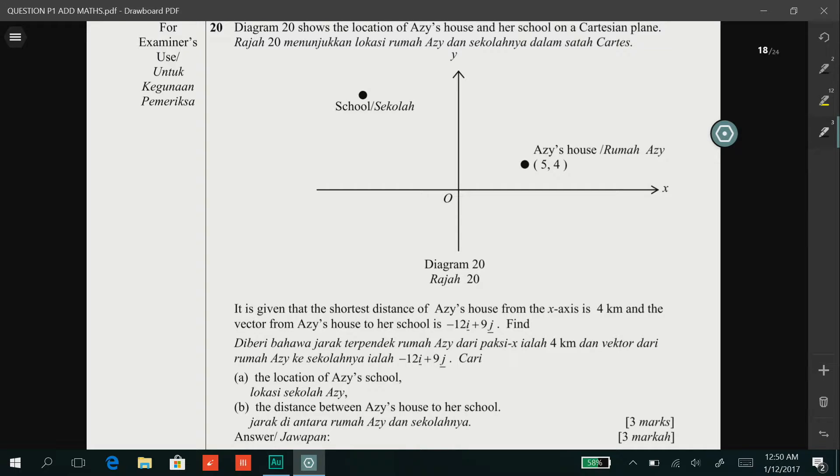This question is from Vector, form 5 topic. Diagram 20 shows the location of Aziz's house and her school on a Cartesian plane.